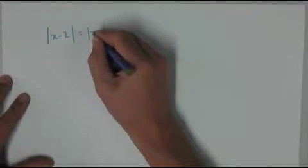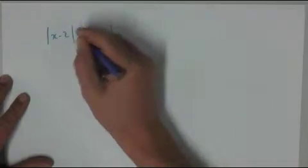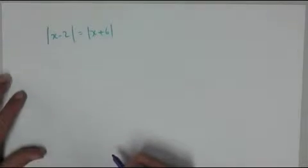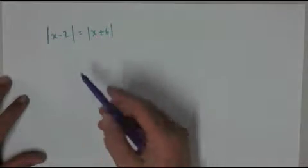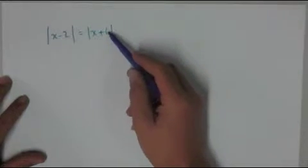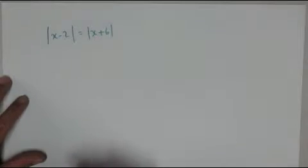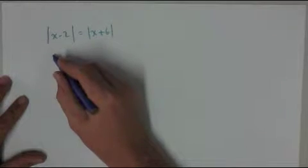If I had two absolute value functions, so |x-2| = |x+6|, the absolute value of both, then as I said before, we're looking at whether or not this would be positive or negative, and also this would have a positive or negative answer. So there are many situations we could have.